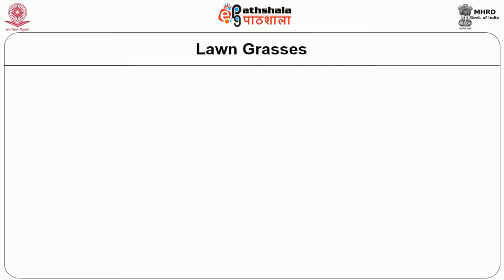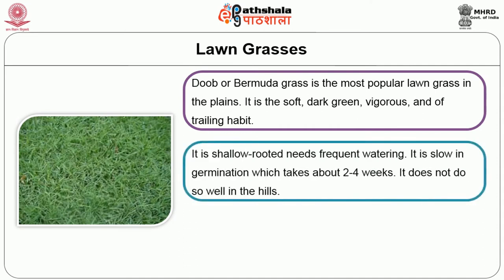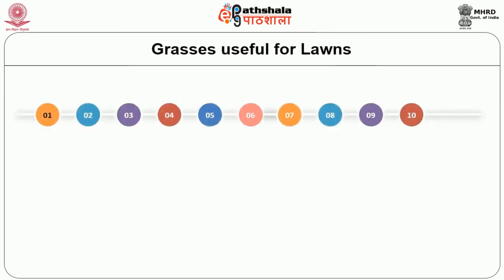Then we will see the lawn grasses. Durva or Bermuda grass is the most popular lawn grass in the plains. It is soft, dark green, vigorous and of trailing habit. It is shallow rooted and needs frequent watering. It is slow in germination which takes about 2 to 4 weeks. It does not do so well in the hills. Another grass recommended for the plains is Zoysia japonica. For the hills, the grass recommended is Lolium perenne.